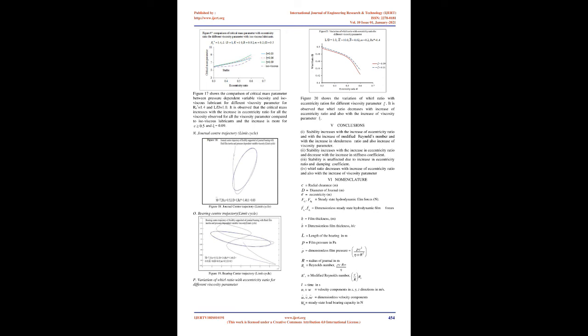Figure 13 shows the variation of critical mass parameter with eccentricity ratio for different stiffness coefficients. It is observed that critical mass parameter increases with the increase of eccentricity ratio, and the trend of increase is more prominent for K = 1.0. Figure 14 shows the variation of critical mass parameter with eccentricity ratio for different damping coefficients. It is observed that the variation of critical mass parameter is insignificant for different damping coefficients.